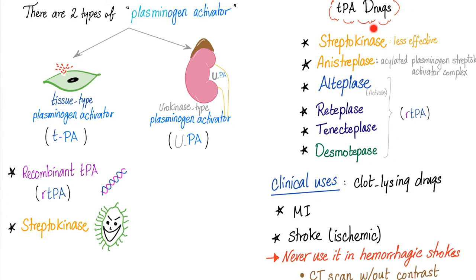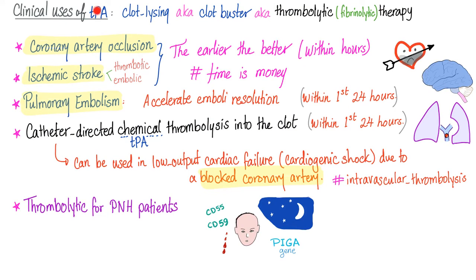Clinical uses of TPA and these thrombolytic or fibrinolytic drugs — also called clot busters — include acute MI, strokes, DVT, and pulmonary embolism. Never use fibrinolytics in hemorrhagic stroke, only in ischemic stroke. To tell the difference between ischemic and hemorrhagic stroke, use a CT scan of the head without contrast. The earlier you administer the drug, the better — time is money. Catheter-directed chemical thrombolysis is also an option, injecting TPA or urokinase directly at the clot.